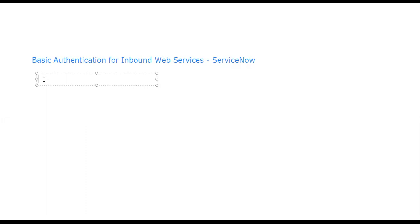Previously we have seen three types of inbound web services. The first is direct — using the ServiceNow Table API, which is enabled out of the box for each table. The second is import set web services, where through transform map capabilities we can integrate using an intermediate staging table that transforms data to the target table.